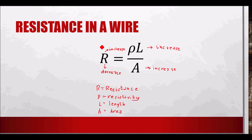Wires of larger cross-sectional area have higher ampacity because they have lower resistance. Since resistance hinders the flow of current, lower resistance allows a greater flow of current — that is the practical application of the formula R = ρL/A.